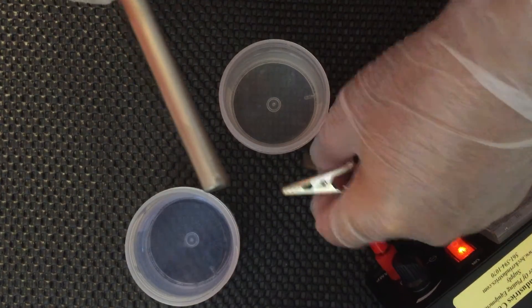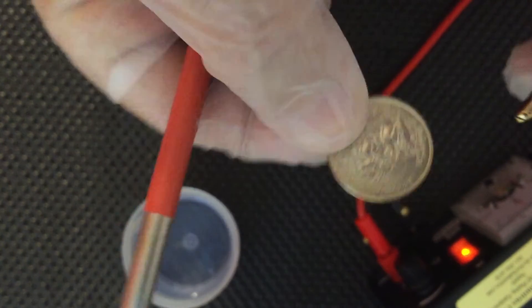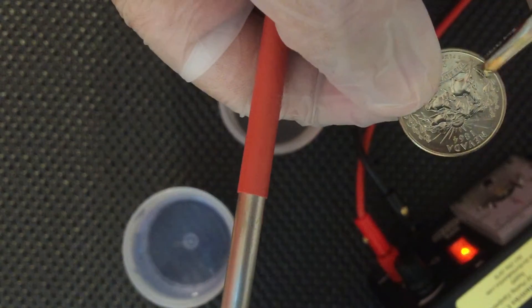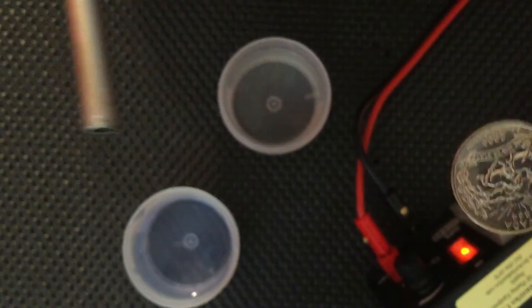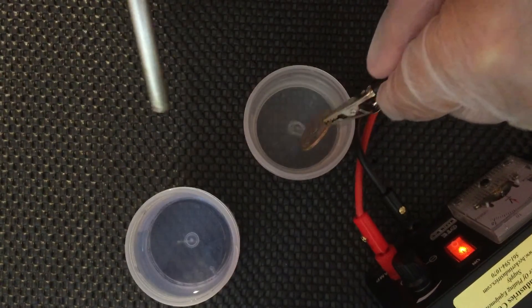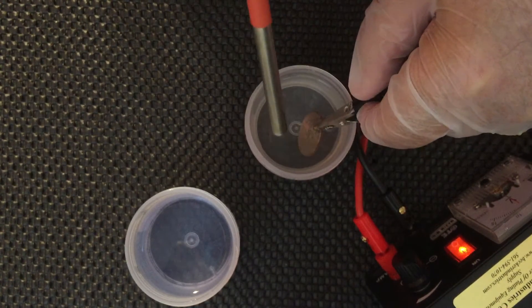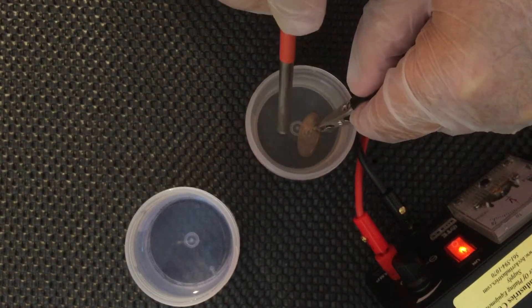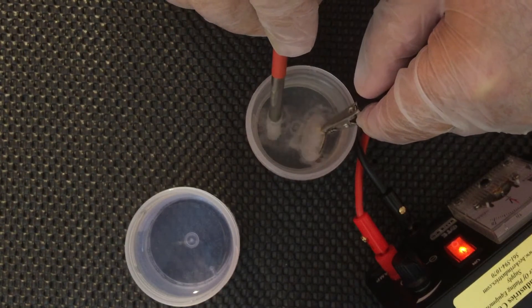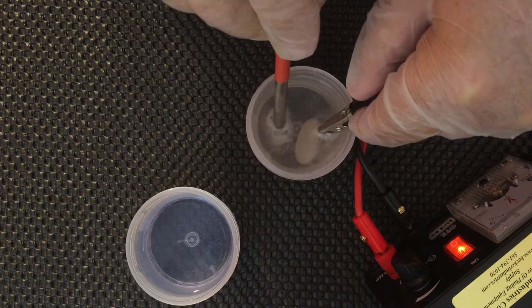For bath plating, you don't need the cotton tip; you just need the tip of the anode. Once again, you connect your coin to the negative with an alligator clip. Dip it inside the gold solution. At the same time, you put the tip of the anode in the solution. If you see it started bubbling, you leave it like 15-20 seconds.